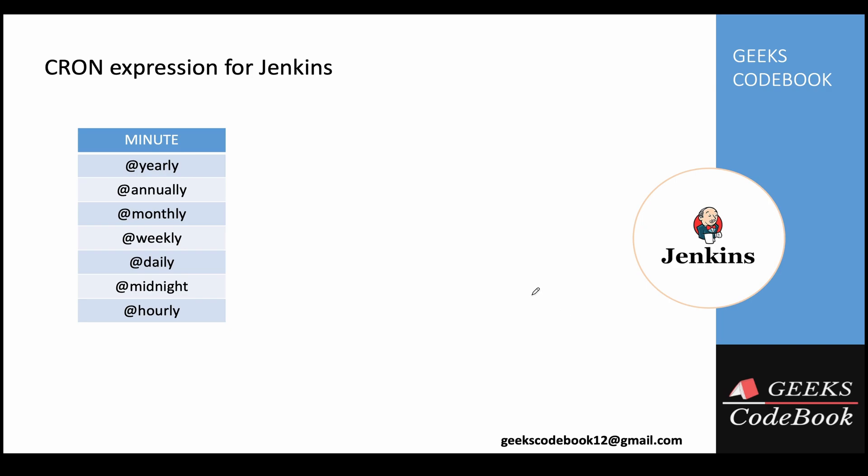You can also use special alias values such as @yearly, @annually, @monthly, @weekly, @daily, @midnight, or @hourly instead of writing out a full cron expression. So the important part of scheduling a Jenkins job is how you define your cron expression. I hope you understood — if you have any questions, please add your comment. Thank you.